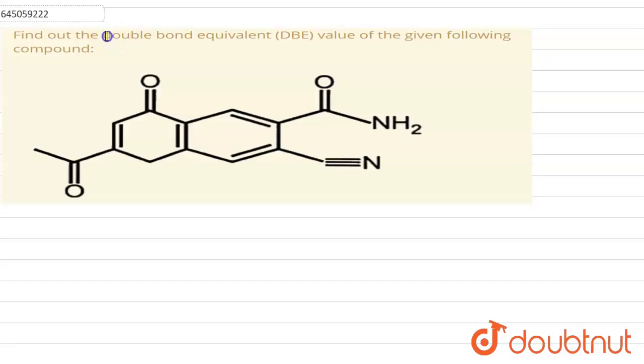Hello everyone, in this question we have to find out the double bond equivalent of the given compound. So first of all, let's write down the molecular formula of the given compound. The molecular formula of the given compound is C14 H10 O3 N2. This is the molecular formula.